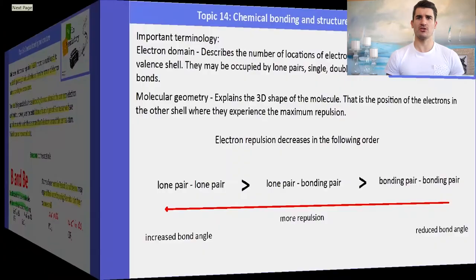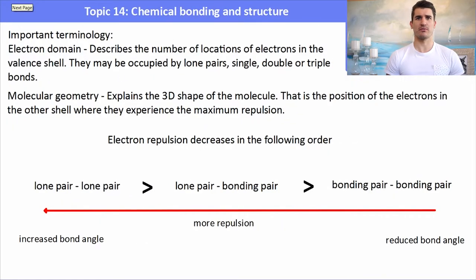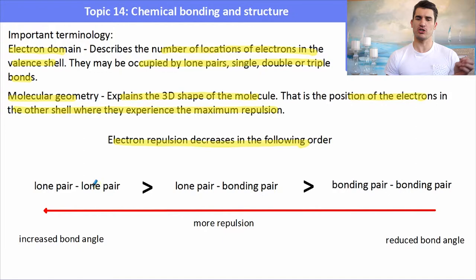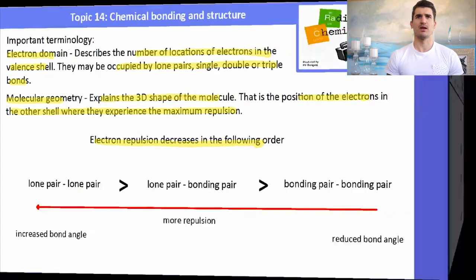Some important terminology to review: electron domains is the number of locations of electrons in the valence shell, which could be occupied by lone pairs, single pairs, or double or triple bonds. The molecular geometry is the shape of the molecule. Remember the increasing repulsion order: lone pair–lone pair repels the most, bonding pairs repel the least.